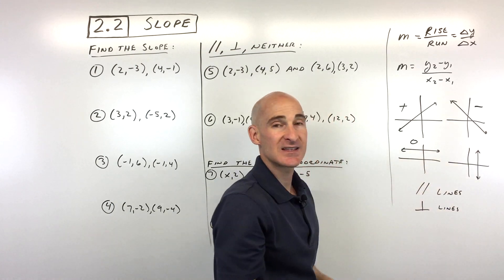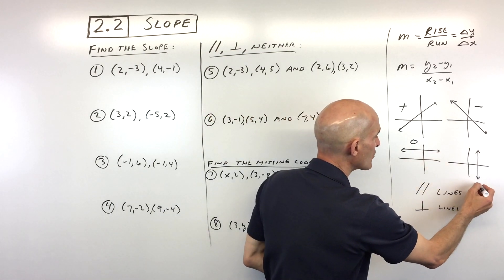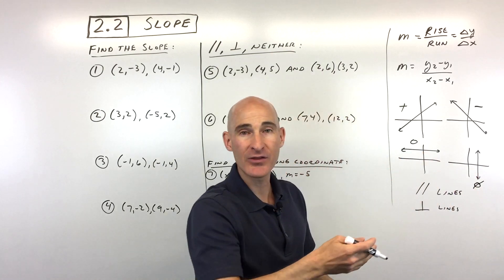And then we have a vertical line. That's actually called an undefined slope. So we can either write undefined, or I'm going to just write it with a 0 with a line through. That just means undefined.